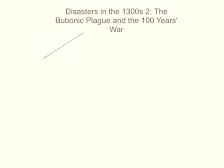Welcome to the second part of disasters in the 1300s. In this video, I'm going to quickly go through the bubonic plague and the 100 years war. In the previous video, you learned about the Great Schism. Hopefully you know it quite well. So we have bubonic plague number one, and the 100 years war number two.